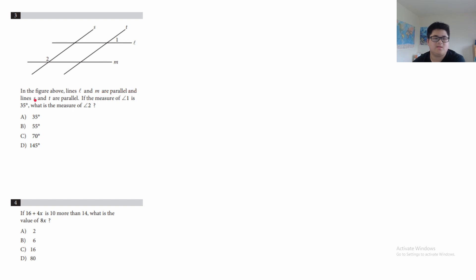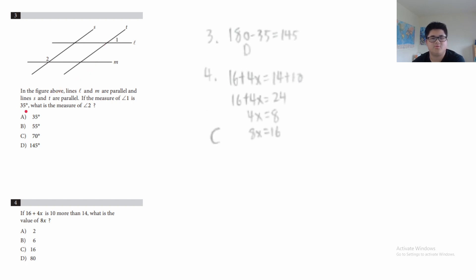Question 3: lines L and M are parallel and lines S and T are parallel. If the measure of angle 1 is 35°, what is the measure of angle 2? Angle 1 and the adjacent angle along the straight line are supplementary, so that adjacent angle is 180° − 35° = 145°. Since the lines are parallel, corresponding angles are equal. Angle 2 is also a corresponding angle, so angle 2 = 145°. The answer is D.